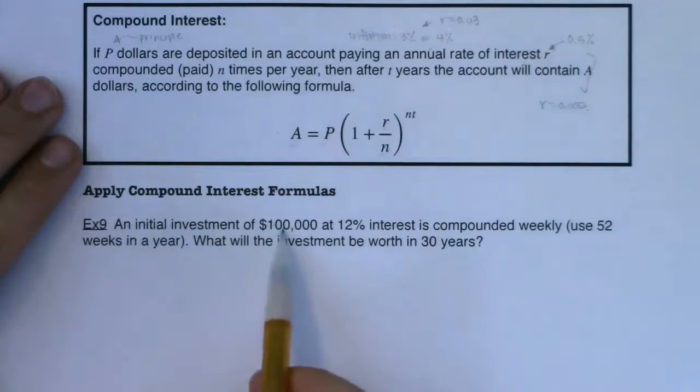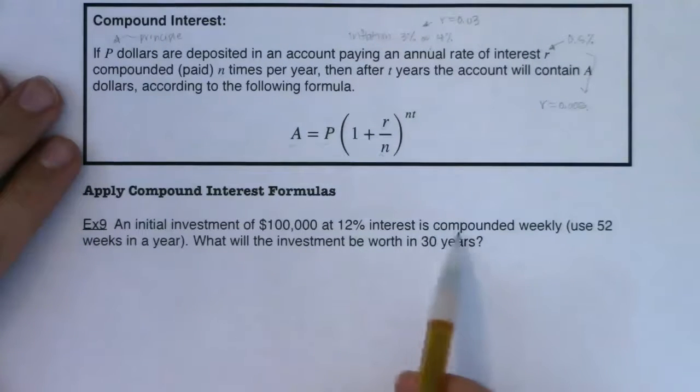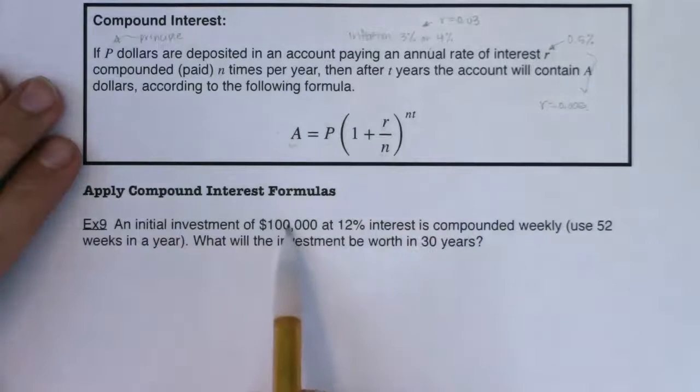So an initial investment of $100,000 at 12% interest is compounded weekly. What will the investment be worth in 30 years? And you can tell this is a made up problem. I do not have $100,000. I have never heard of a 12% interest account. That would be fantastic.